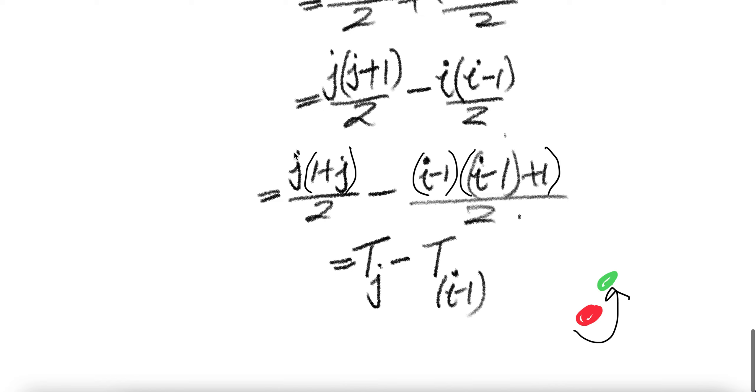Notice that this is the number of terms, first term plus the value of the last term divided by two. This is the J triangular number, whereas this one has the number of terms I minus one divided by two. The first term is one, and the last value of the term is I minus one. And this is the I minus one triangular number. This is what we want. Done.